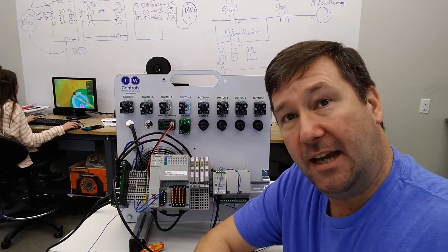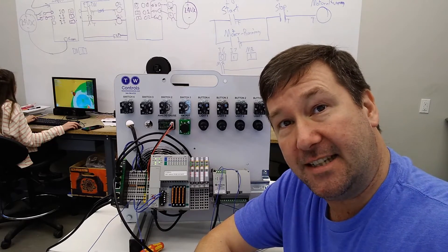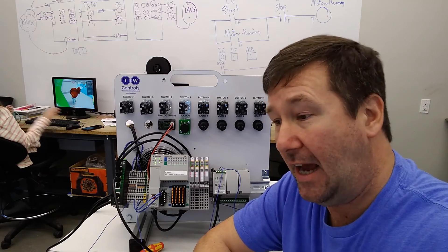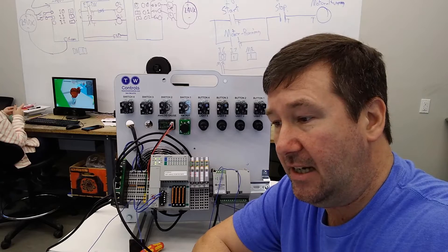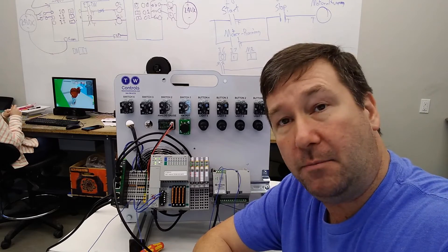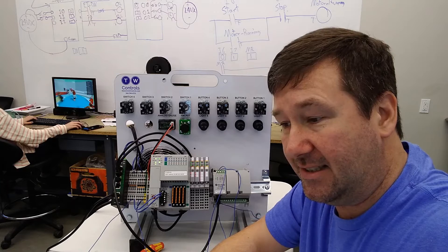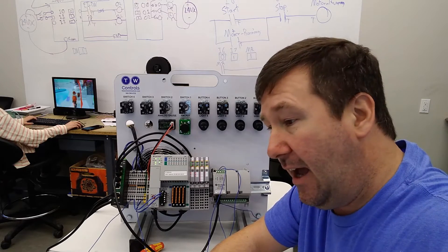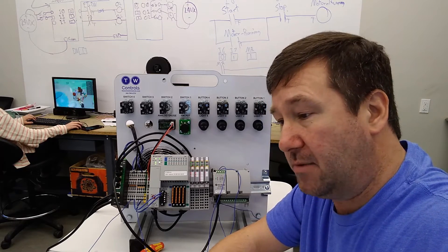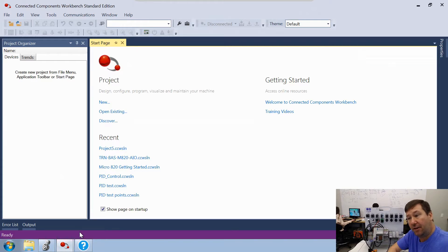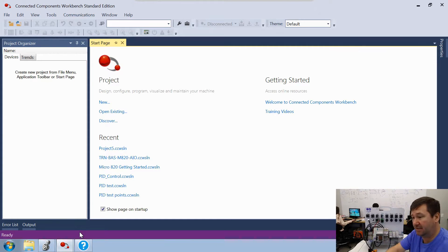Let's go ahead and download this program as-is so we can understand the need for the data conversion we'll have to do. If you need help downloading, look in the description — we have links to a complete lesson series covering how to download, create programs, configure drivers, and more. Once you're done downloading, let's go into Connected Components Workbench, which is the software for the Micro 820 PLC.